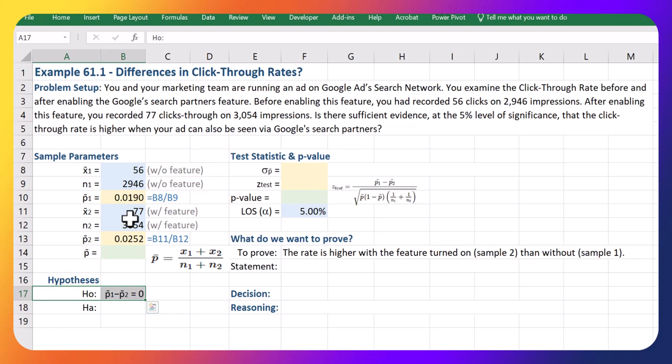If there were no difference, then we can just pool together our two samples that we have and get a proportion overall. So overall there are 56 plus 77 clicks through out of a total of 2,946 plus 3,054 impressions.